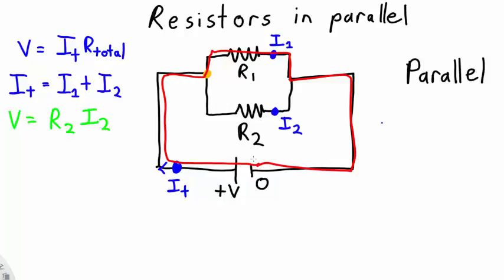So in this loop I have the total voltage. For this loop I have the voltage gained across this battery here is going to be equal to the voltage lost across resistor 1, which using Ohm's law is equal to R1 times I1. So now I have four equations which I'm going to number.